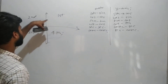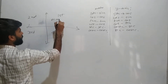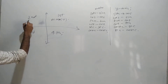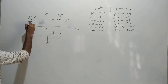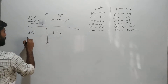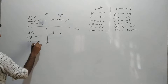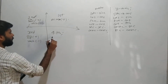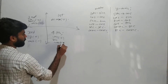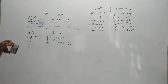Now, how it changes for the different quadrants. In the first quadrant, all trigonometric ratios will remain positive. In the second quadrant, sine and its reciprocal cosec will remain positive and the rest will be negative. In the third quadrant, tan and its reciprocal cot will be positive and the rest will be negative. In the fourth quadrant, cos and its reciprocal sec will be positive and the rest will be negative.